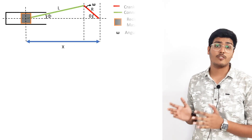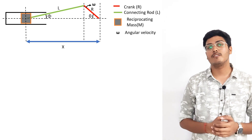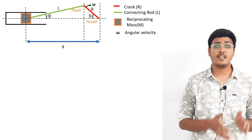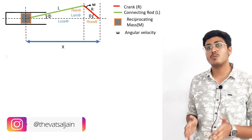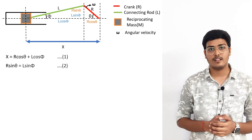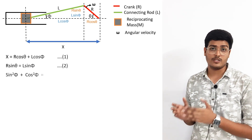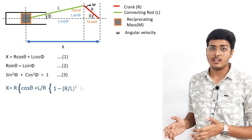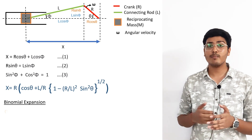Here is the geometry for a single cylinder engine or slider-crank mechanism. By trigonometry we can write the components as r·cos θ and r·sin θ, and similarly l·cos φ and l·sin φ. We can write x = r·cos θ + l·cos φ, and r·sin θ = l·sin φ. We also know that sin²φ + cos²φ = 1. On solving these three equations we get the following value of x, which can be expanded using the binomial theorem.